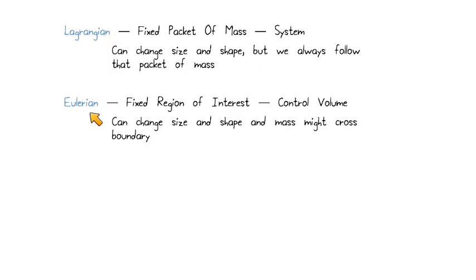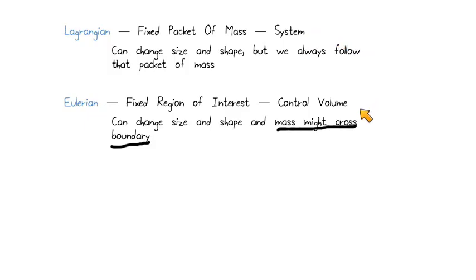The Eulerian perspective is where we're tied down to some region that we're interested in, instead of some fixed packet of mass. The Eulerian perspective can still involve a change of size and shape, but the big difference is that mass might cross the boundary now, where mass never crosses the boundary of the Lagrangian approach because that is fundamentally one packet that we're following. We're going to apply names to these — the same names used in thermo. For the Lagrangian approach, we call that a system because it has constant mass. For the Eulerian approach, we call that a control volume because it's a region that we're interested in, not the substance within it.